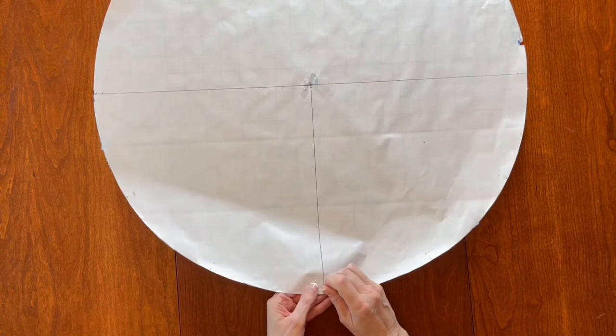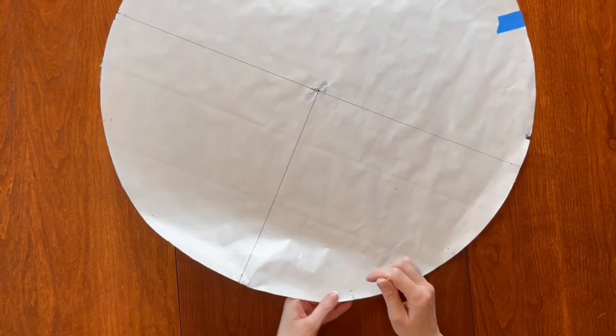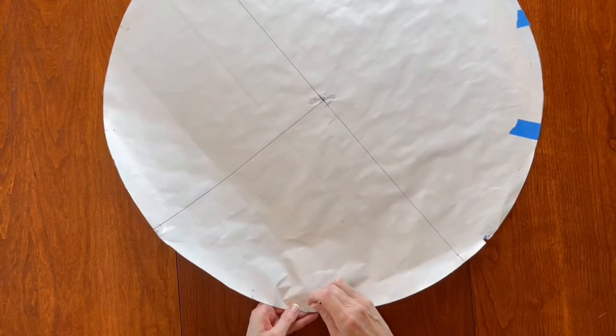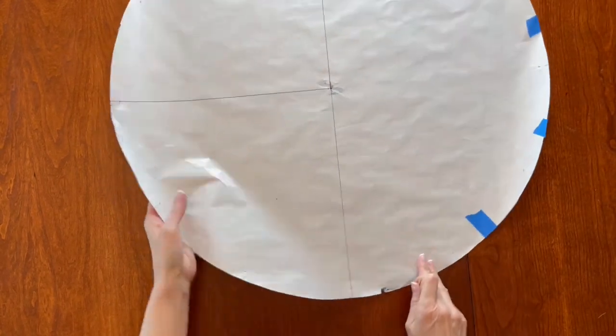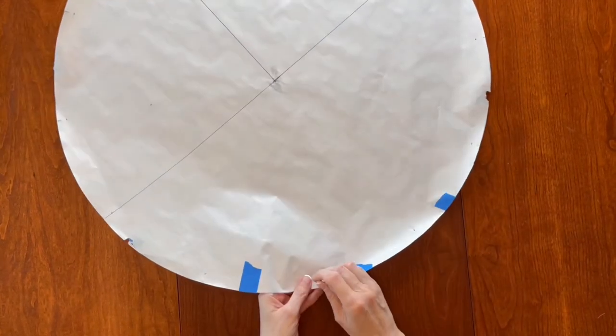When you've finished with all of these markings, take a toothpick or a needle and puncture a little hole at all the half inch points going all the way around. This will allow you to make markings on the wall without having to lift up the clock template.